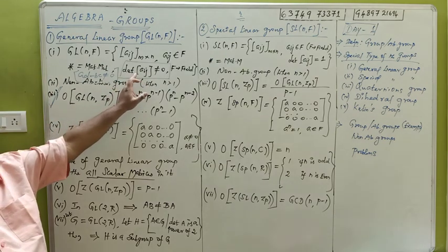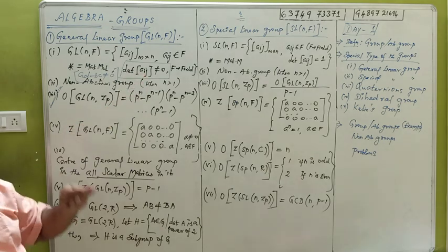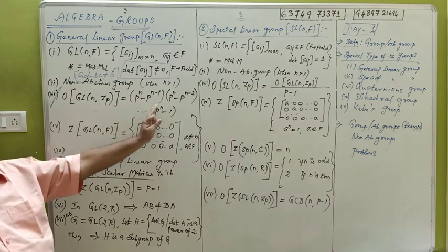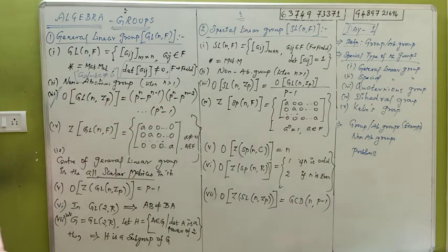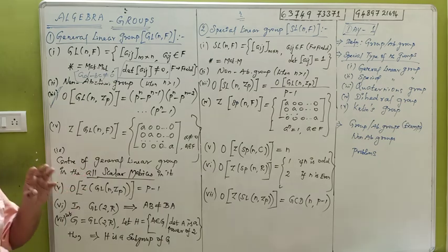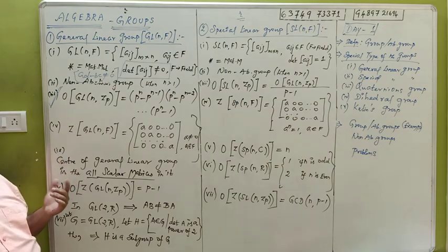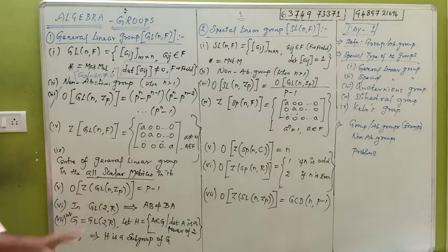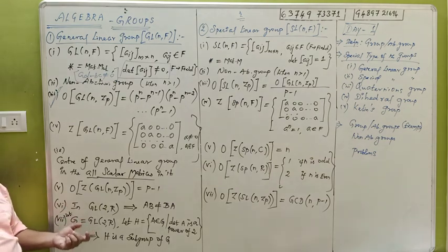The determinant value is not equal to 0. AD minus BC is not equal to 0 — it is a general linear group. The order is p power n minus p, times p power n minus p^(n-1), times p power n minus p^(n-2), times p power n minus 1. This is the general order of the general linear group.